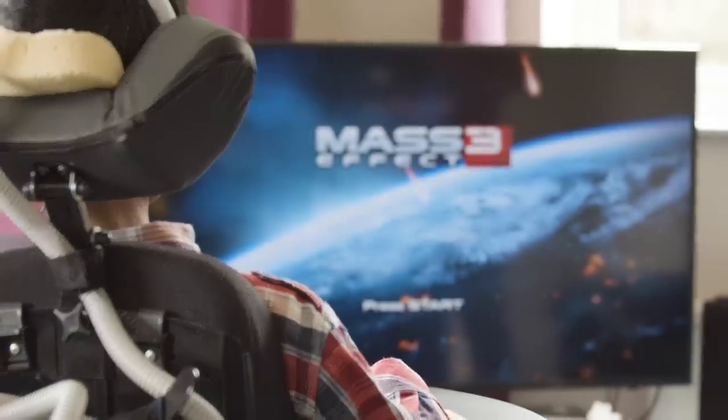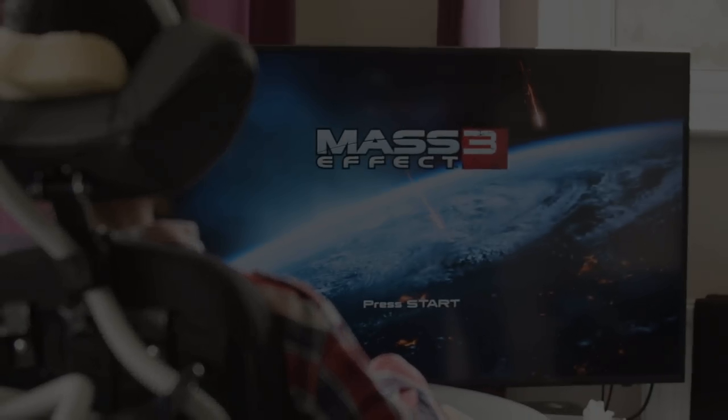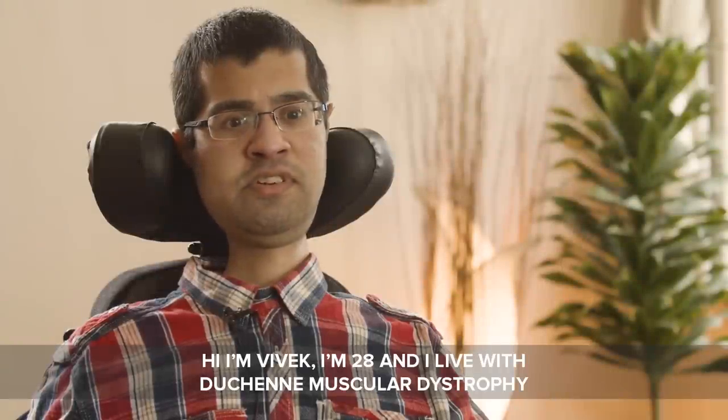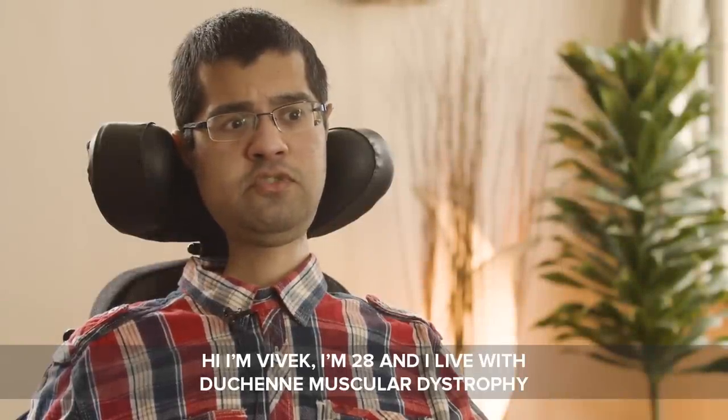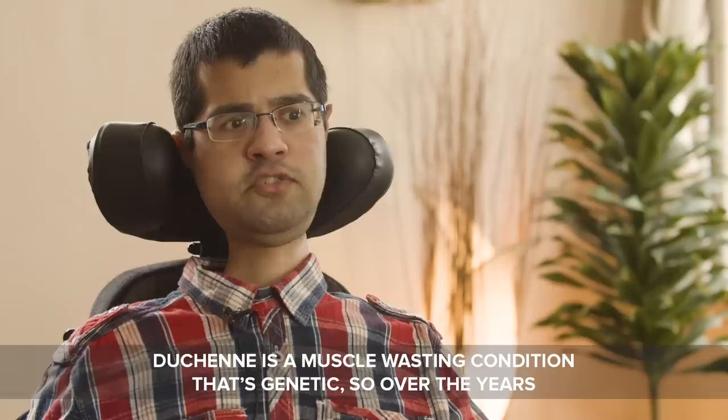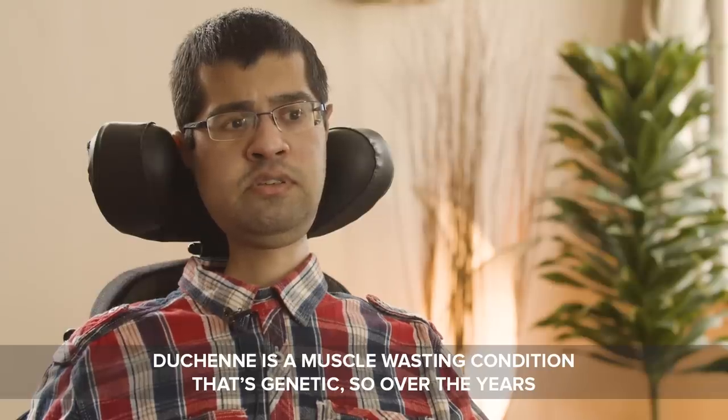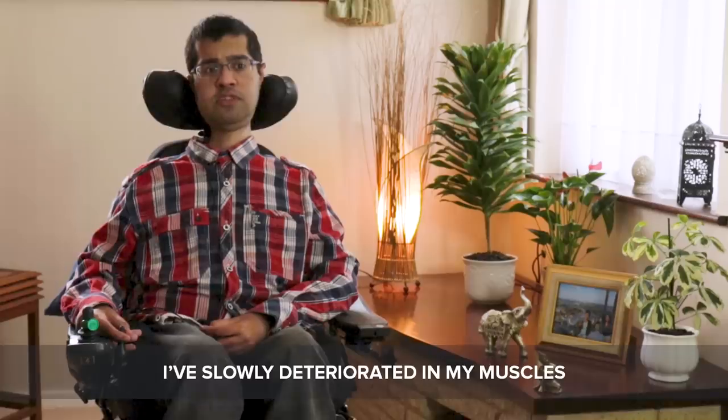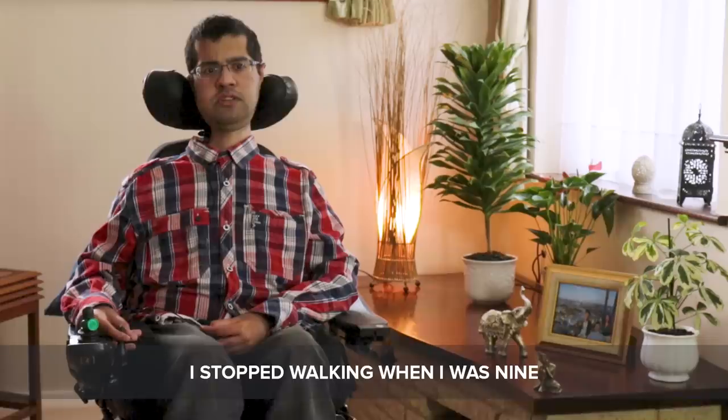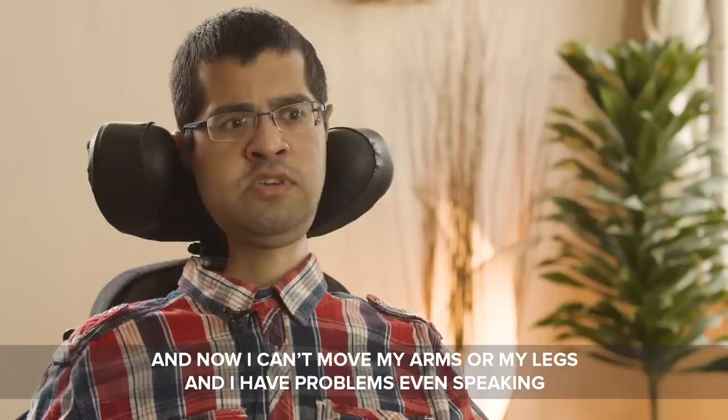Hi, I'm Vivek and I'm 28 and I live with Duchenne muscular dystrophy. Duchenne is just a muscle wasting condition that's genetic. So over the years, I've slowly deteriorated in my muscles. I stopped walking when I was nine and now I can't move my arms or my legs or control. I have problems even speaking.